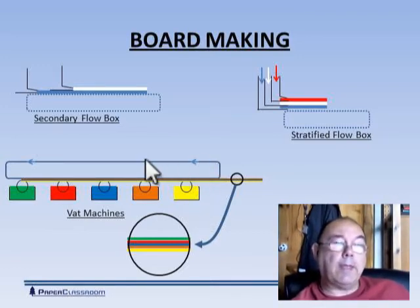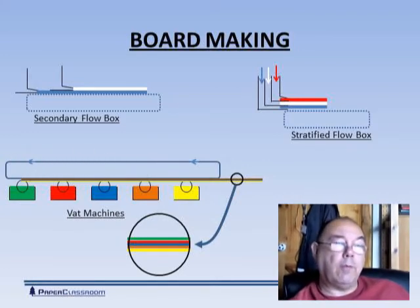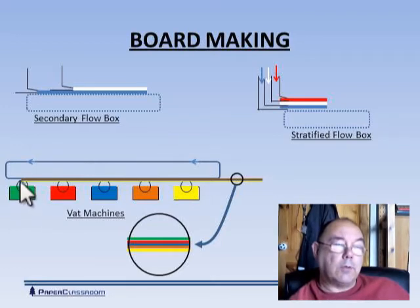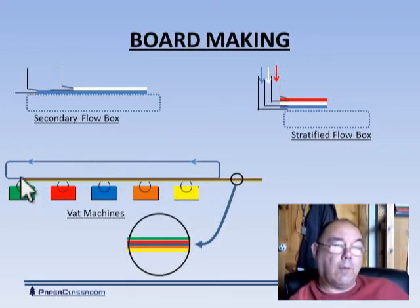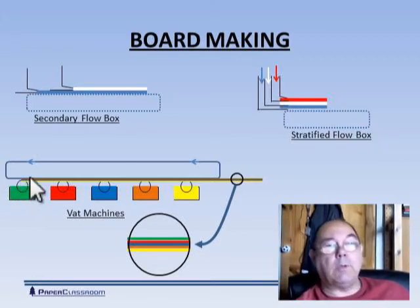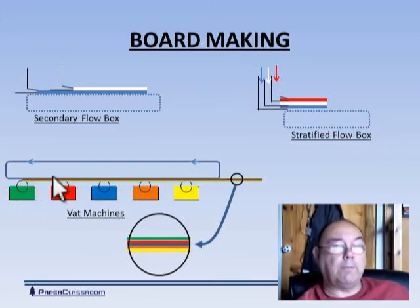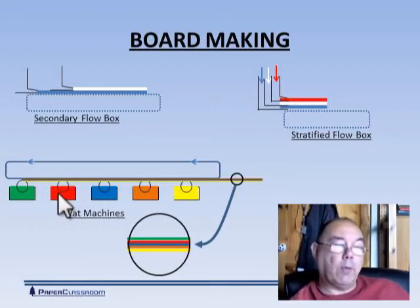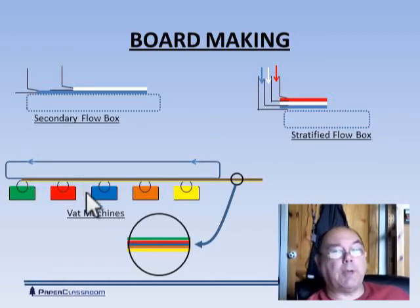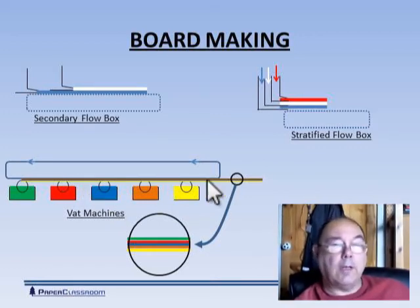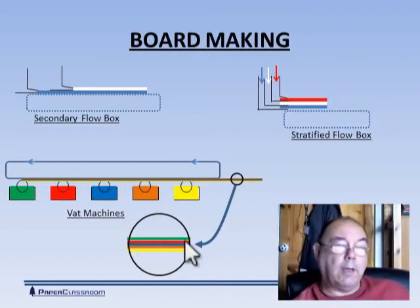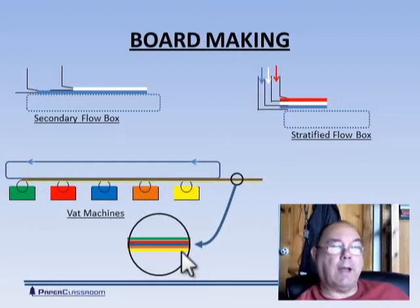This line here is the papermaking felt. So the felt comes around in this way. This VAT cylinder will go around in a clockwise direction to pick up fibers, come here, deposit them on the felt itself. When it gets to this point, this will pick up the red fibers and deposit them on the layer of green fiber that's already present. The blue fibers will go on the red, etc., until eventually in this case you get a five-layer board. And there you can see a little magnification of the five layers.